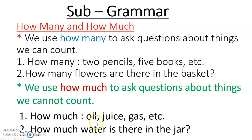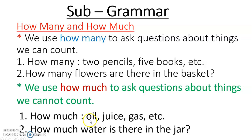For example: 'How much oil?' You can't say one oil, two oil, three oil. So we say 'how much oil'. 'How much juice?' You can't say one juice, two juice. 'How much gas?' You can't say one gas, two gas. Oil, juice, and gas — we cannot count these things, and the same goes for water and kerosene.